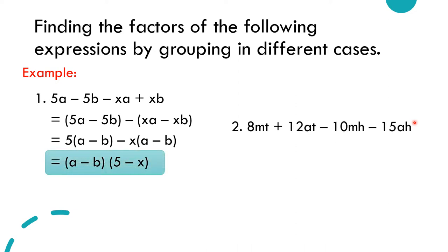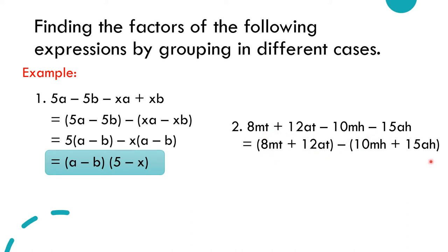Another example: 8mt plus 12at minus 10mh minus 15ah. First, group the first two terms (8mt plus 12at) and the last two terms. Since the operation between the groups is subtraction, distributing the negative gives negative 10mh and negative 15ah, so the second group becomes minus (10mh plus 15ah).